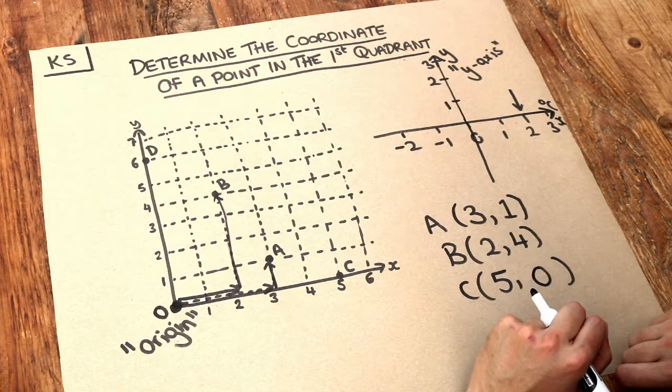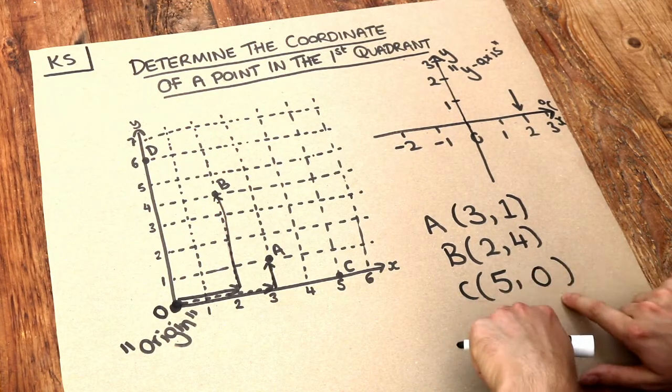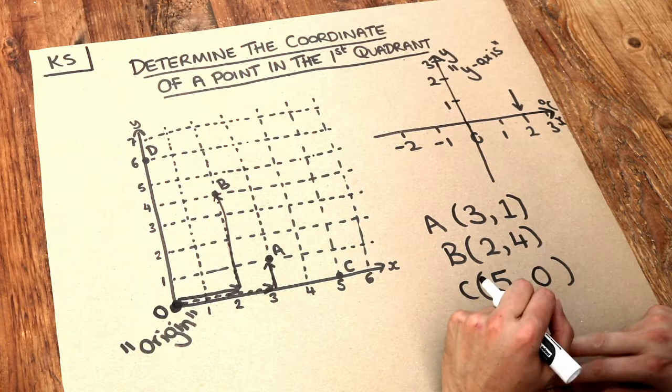And a very common student error is that they get those numbers the wrong way around. They'll say the coordinate of C as zero, five for example.